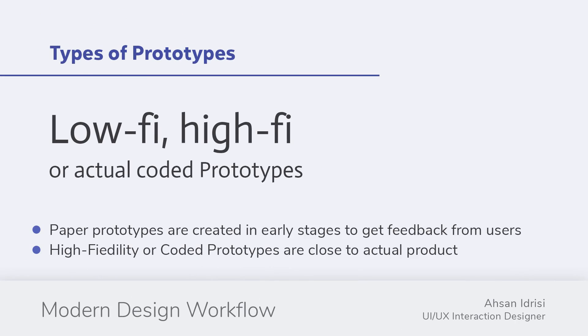There are a few types of prototypes: low fidelity, high fidelity, and actual coded prototypes, which are very close to the actual product. Paper prototypes are basically static or low fidelity prototypes created on paper — you draw different shapes and test them with your users.